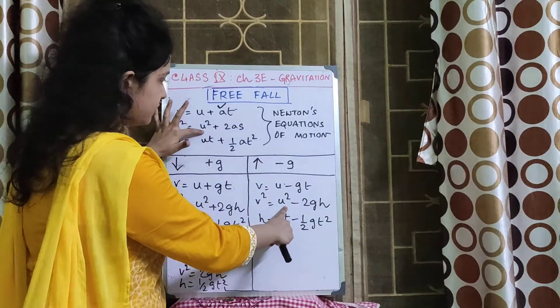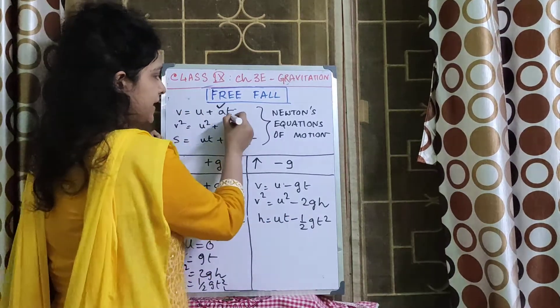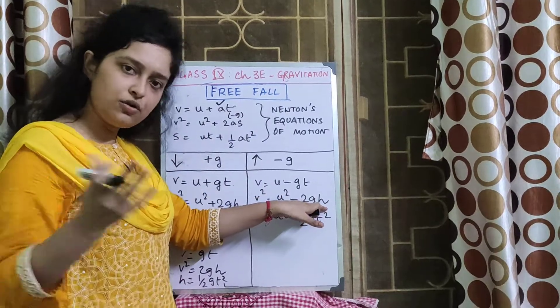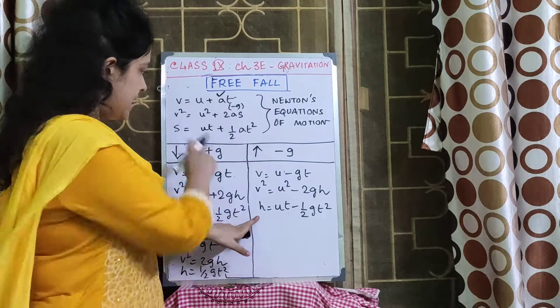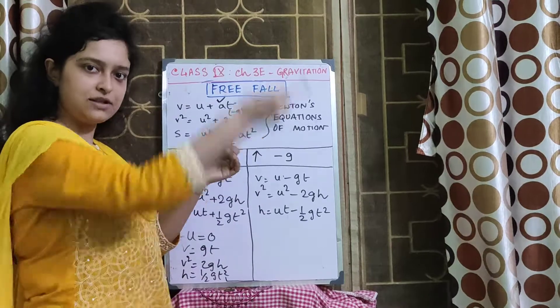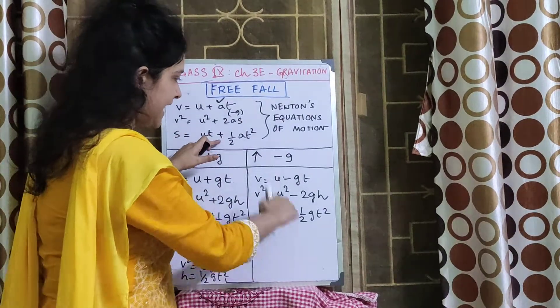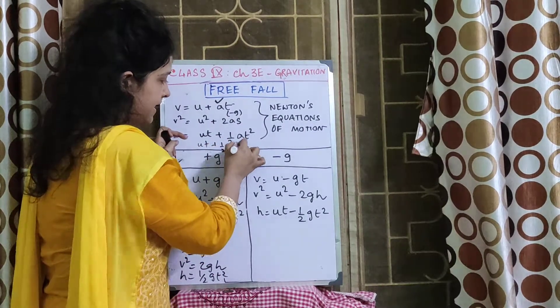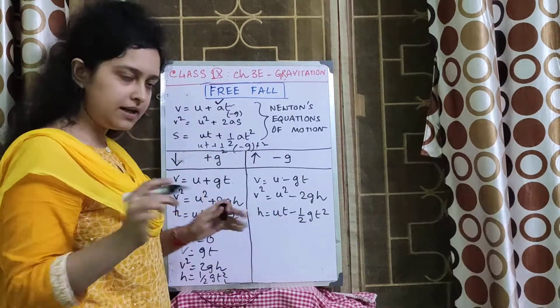V square equal to U square plus 2 into, in place of A I am substituting minus G, so minus 2GH. H again, you know the height. Instead of S, you are writing H, the height traveled. H is equal to UT minus, again see, UT plus half, in place of A minus GT square.